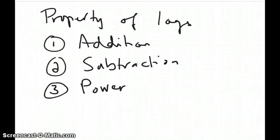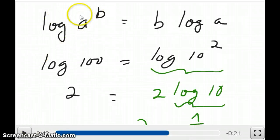The third property is the power property. When the argument of a log, for example a, is raised to a specific exponent, for example b, then this is the same as writing b times the log of a. This is written as follows, and an example is immediately right below it.